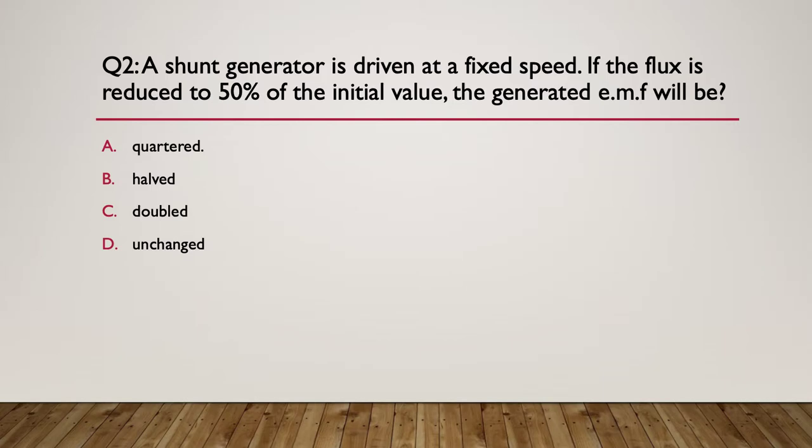Question two: a shunt generator is driven at a fixed speed. If the flux is reduced by 50% of the initial value, the generated EMF will be what? Will it be quartered, halved, doubled, or unchanged? That's A, B, C, or D. Pause here.